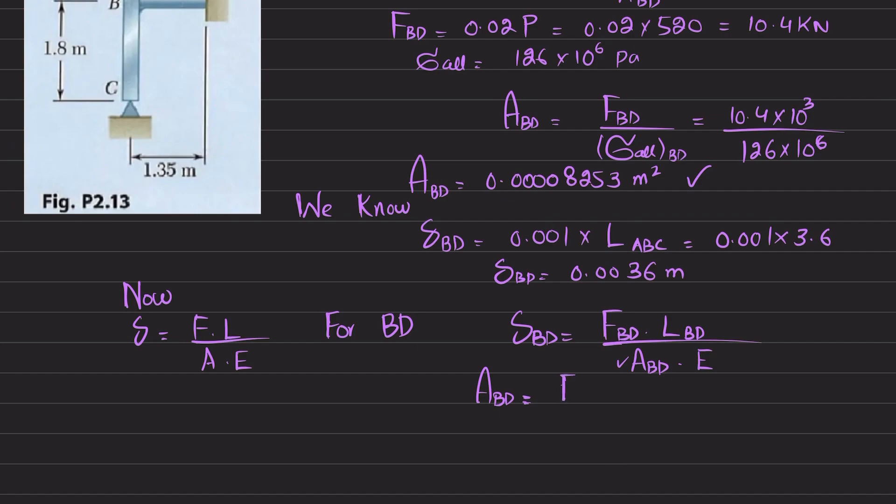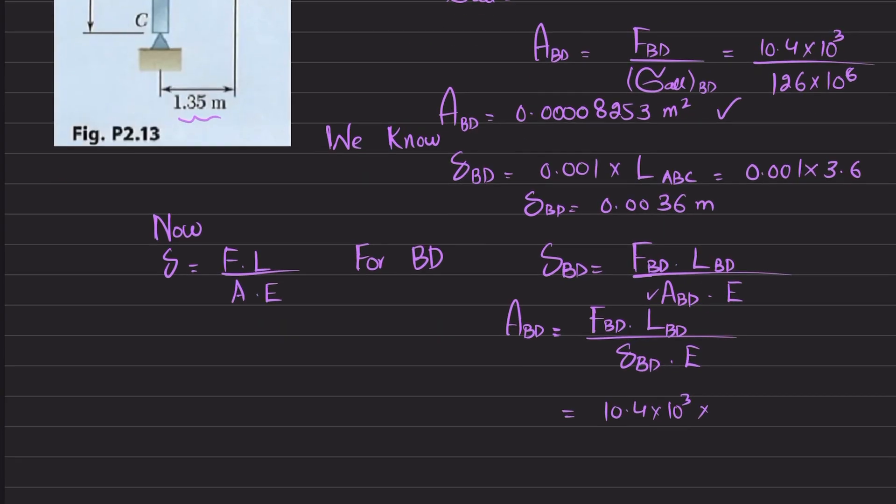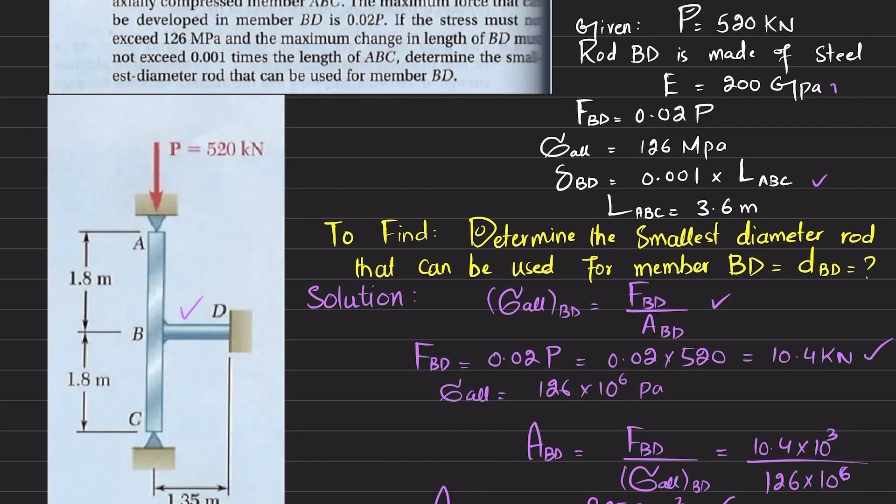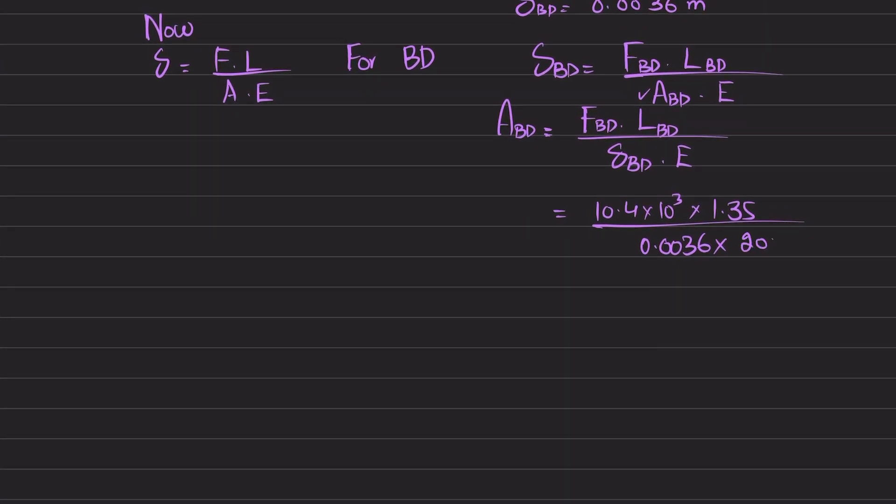So for BD, we have change in length of BD is equal to force in BD, length of BD divided by area of BD into E. You have force BD is 10.4 kilonewton, so 10.4 into 10 to the power 3 multiplied by length of BD. So this is BD, length of BD is 1.35, so 1.35 divided by change in length which is 0.0036 and E is given in the question, which is 200 gigapascal. So 200 into 10 raised to the power 9 pascal, this is the area of BD. When you calculate it, you will get this area will be equal to 0.00195 square meter.